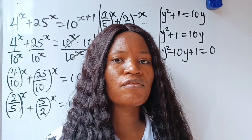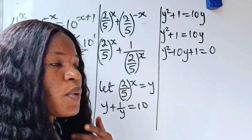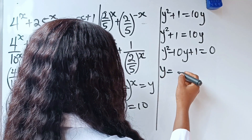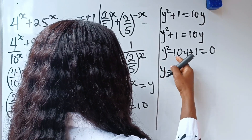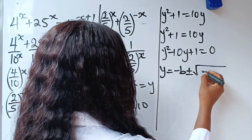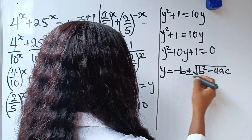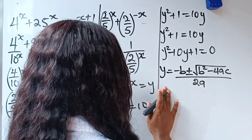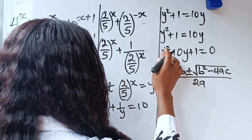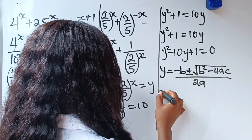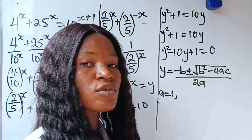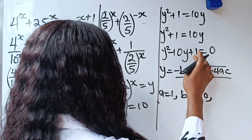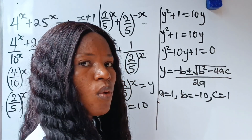Now we are going to find the value of y using the quadratic formula, which states that y is equal to minus b plus or minus square root of b squared minus 4ac, everything divided by 2a. The value of our a is the coefficient of y squared, which is 1. Our b is the coefficient of y, which is minus 10, so b equals minus 10. And our c is the constant, c equals 1.